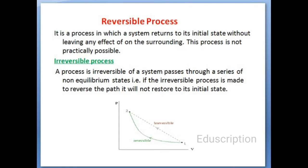Now, reversible process: it is a process in which the system returns to its initial state without leaving any effect on the surrounding. This process is not practically possible. In a reversible process, whatever changes occurred, the system comes back to its initial point without leaving any changes on the surrounding. But we know it is practically impossible because there will always be losses.